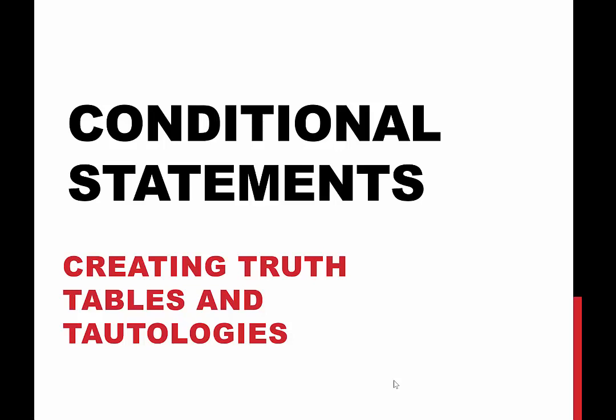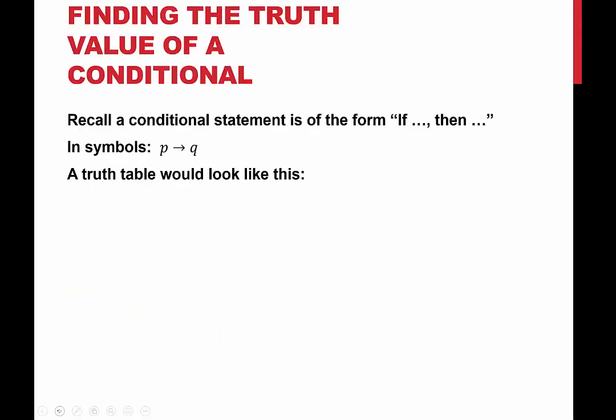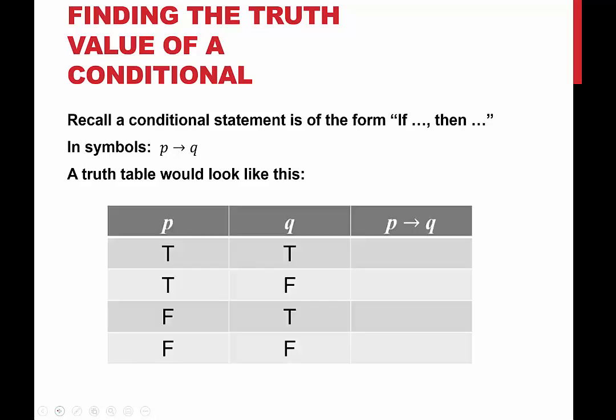Hello and welcome to HelpYourMath.com. In this video on conditional statements, we're going to look at creating truth tables and tautologies. So first let's just review what a conditional statement is. A conditional statement is of the form if-then. In symbols we would say if p then q, so it's p arrow q, and a truth table would look like this.